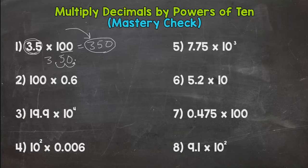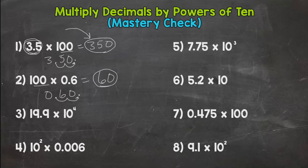Number 2, 100 times 0.6. Two zeros, move the decimal twice, 1, 2. Fill with the zero, we have 60 as our product.